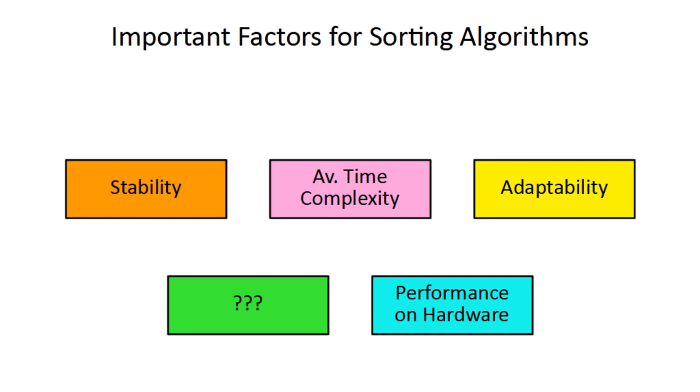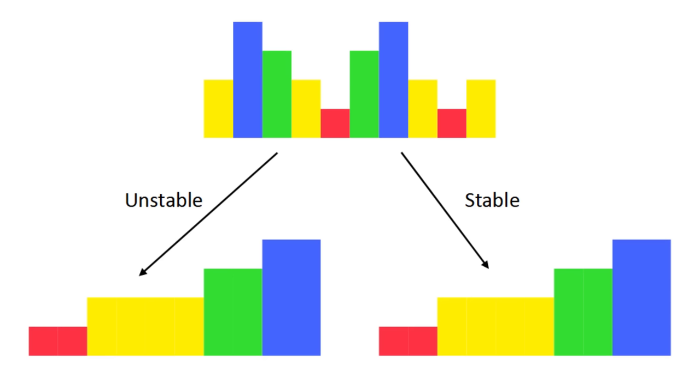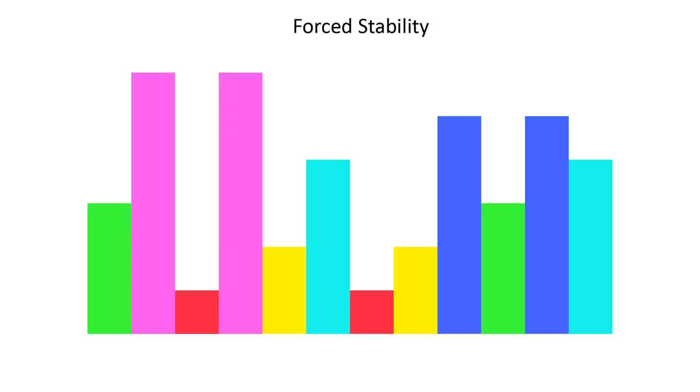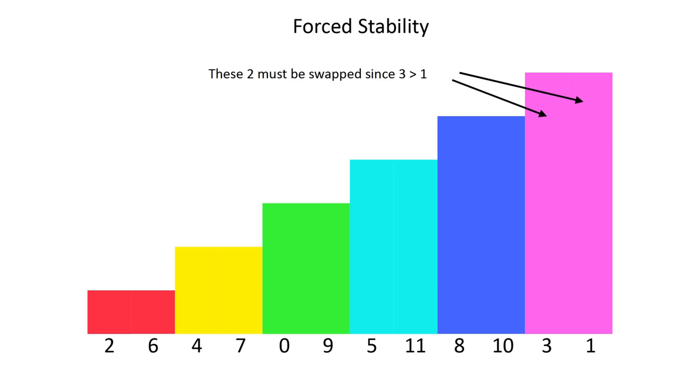The third factor is stability. A stable algorithm is one that preserves the relative order of pieces with equal values. Technically, you can make any algorithm stable by assigning each piece an extra value denoting its original location, and using these to break up any ties you encounter. This works, but requires O of N extra space complexity.